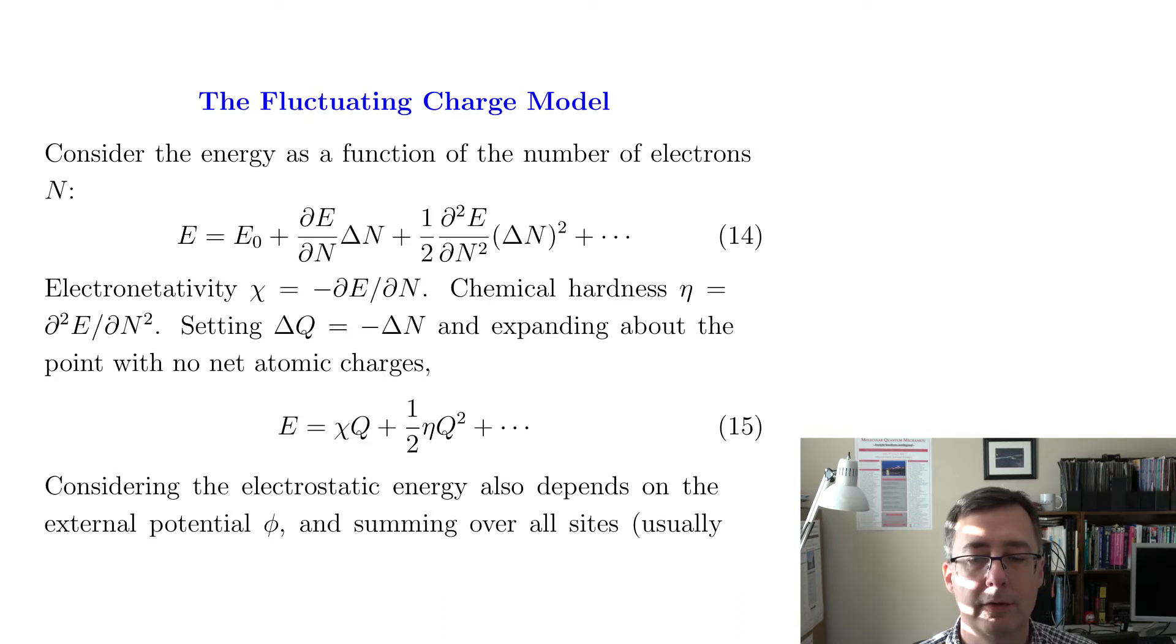One way to do that, one of the simpler ways to do polarizable force fields is the so-called fluctuating charge model. So let me say a couple words about the fluctuating charge model just to give you a taste. I'll show some equations, but we won't get into the nitty-gritty of them. So let's start off with this idea in equation 14 that the energy is some baseline energy E0, plus this sort of Taylor-like series where I'm expanding in delta n, where n is the number of electrons. And this may seem like a weird idea because you might say, well, don't I know how many electrons a molecule has? Isn't that a fixed constant? Well, yes and no.